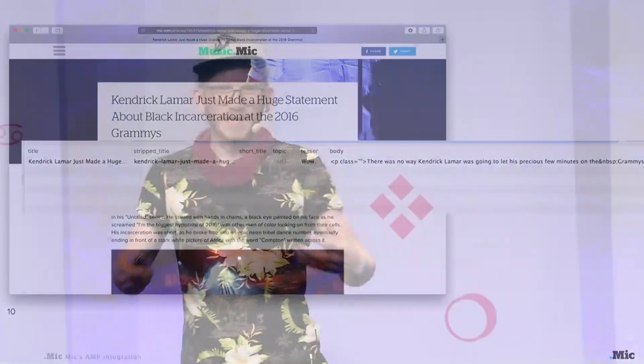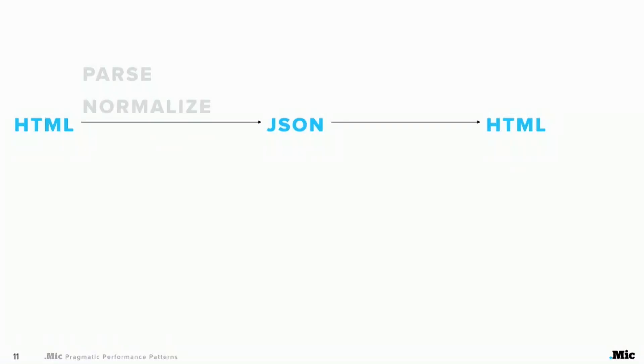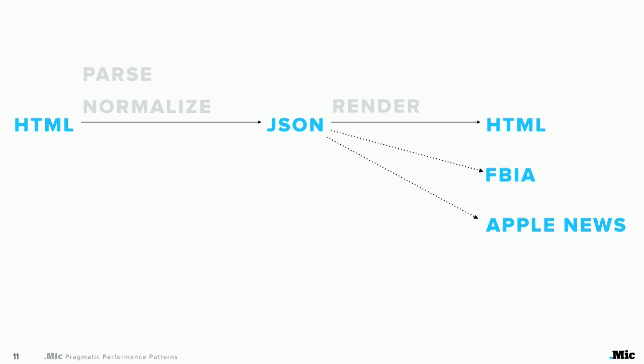So I got this idea when I was sitting there. Maybe we could just take this HTML and transform it to JSON, because JSON is much easier to work with. The reality today is that even though a lot of what we do is HTML, we also need to have our articles on other platforms — Facebook Instant Articles, Apple News, and AMP. We had HTML in the database, and now we need to be in a JSON-based format.